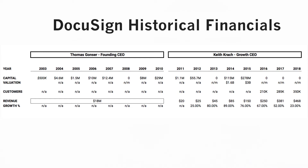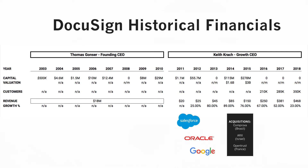In Keith's first year, he made $20 million in revenue, whereas the first half of the company's life only collectively made about $18 million. Suddenly you see him going into large enterprises — getting partnerships with Salesforce, Oracle, and Google. He's globalizing the company and making acquisitions in Brazil, Israel, and France. He's really scaling in a very innovative way.